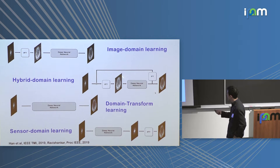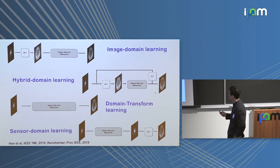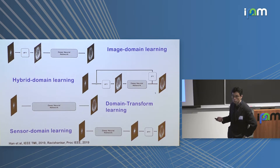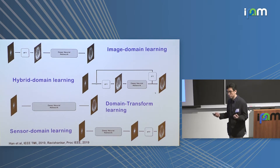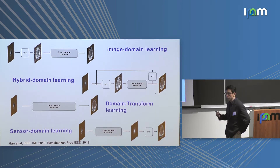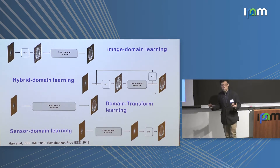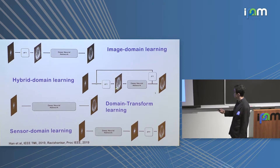In our recent review papers we demonstrate that this can be categorized into four different architectures: image domain learning, hybrid domain learning, domain transform learning, and sensor domain learning approaches. Image domain learning is most widely used — starting with a degraded image from aliasing artifacts or noise, the neural network maps it to clean images. You can use off-the-shelf tools from computer vision literature, but the downside is that without enough data it can result in blurry reconstructions.